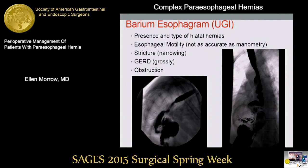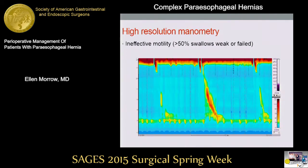A barium esophagram, or upper GI, is usually the go-to study that we think of as surgeons for defining the anatomy. It gives you more dynamic information. It can grossly give you an idea of esophageal motility, although it's not as accurate as manometry for that. It can also grossly show you a picture of their reflux. And importantly, in the acute setting, the upper GI can be very useful for evaluating for obstruction.